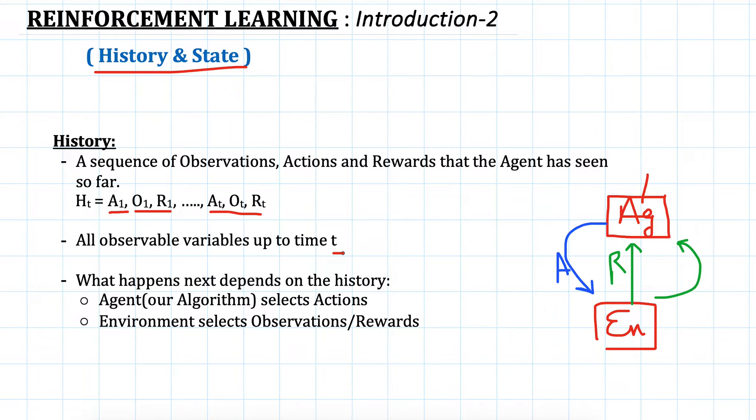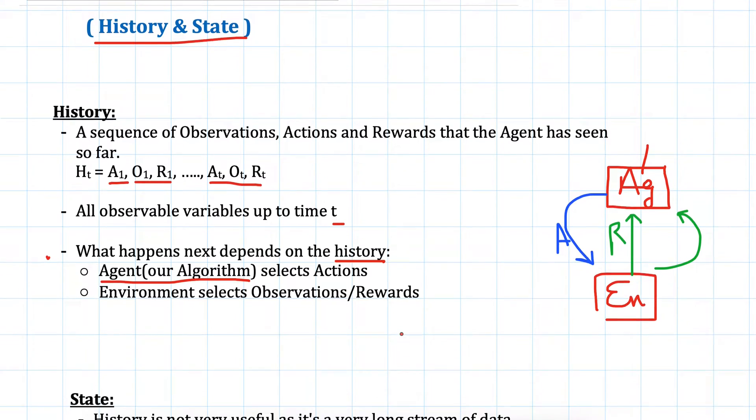Whatever happens next depends on the history. This history is very important because it will be used to determine what will happen next. The agent or our algorithm will select its action based on the history by looking at what action it performed in the past, what reward it got, and what observation it received. The algorithm will keep on evolving and its next action will depend on the history. Environment also selects its observations or rewards depending on the history.